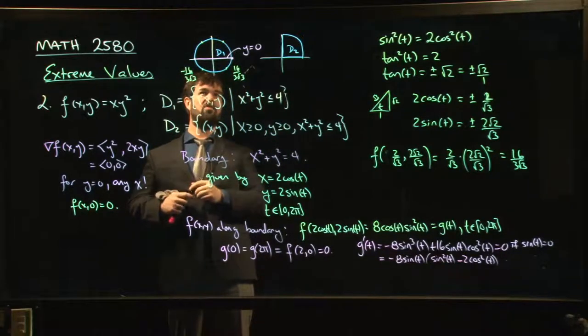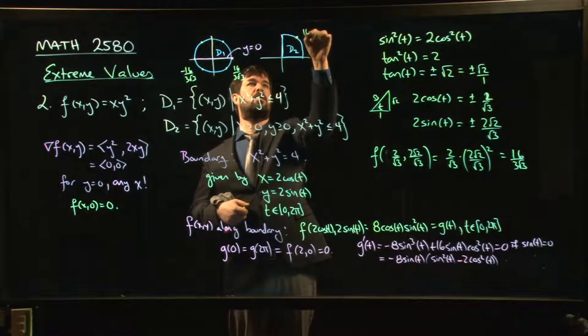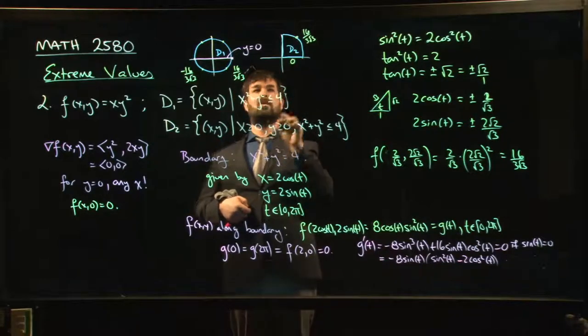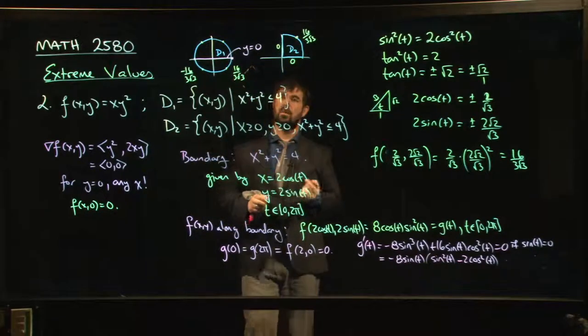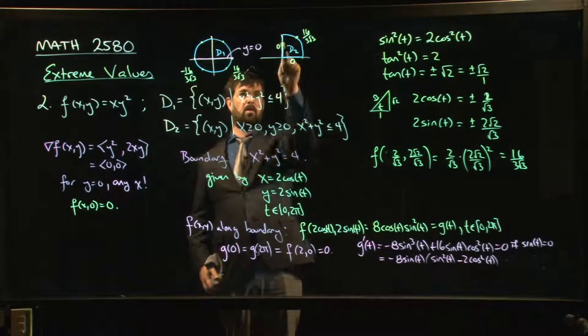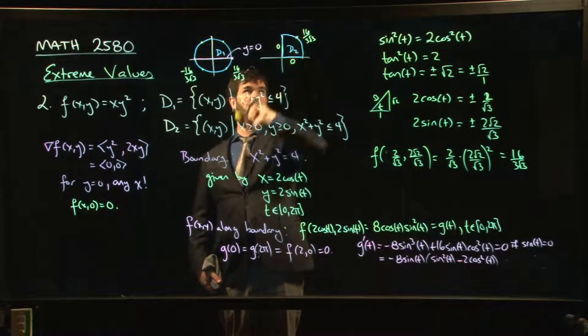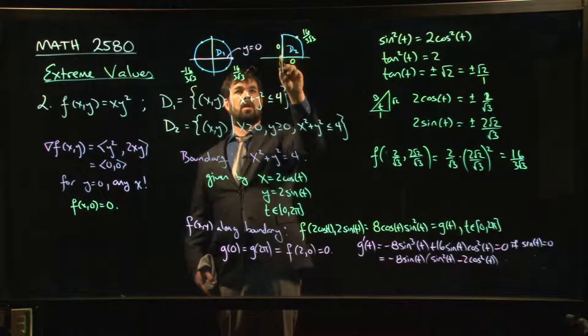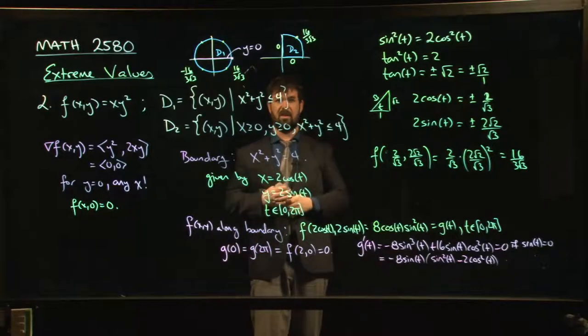Now, what if you wanted to extend to the second region? Well, you still have this point up here where you have 16 over 3 root 3. You know that along this axis, along this side, the value is 0. Along this side, the value is 0. And so if you're looking for the maximum values for this region here where you only take the quarter of a circle, well, the maximum is going to be 16 over 3 root 3, and it happens at that one point there where tan is equal to root 2. And the minimum is 0, and that happens all the way along here and all the way along there. So the minimum actually happens at an infinite number of places.